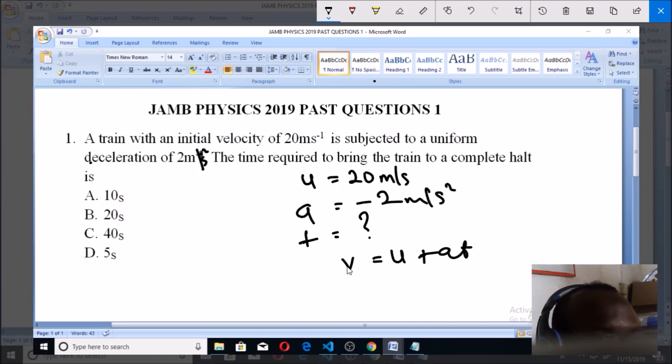So v here—we are told that the train started with an initial velocity of 20. So we are going to have v, which is the final velocity, equal to the initial velocity which is 20. So in place of u we have 20.